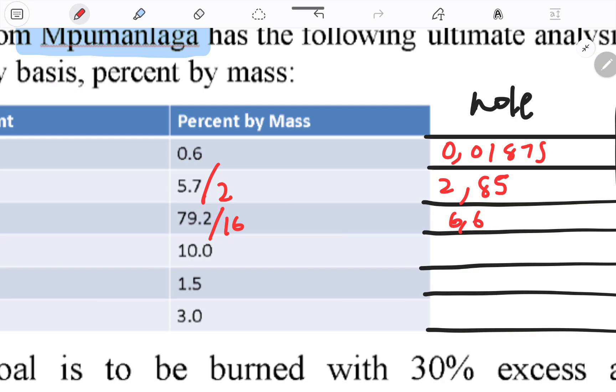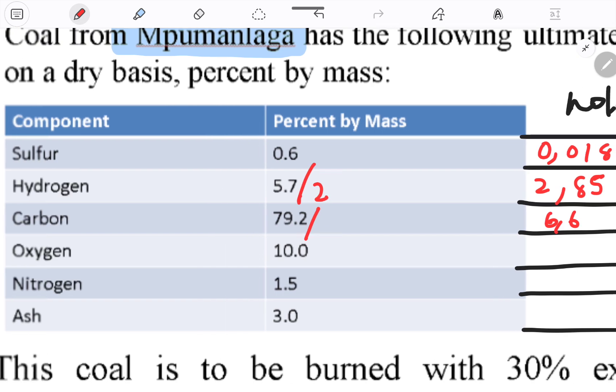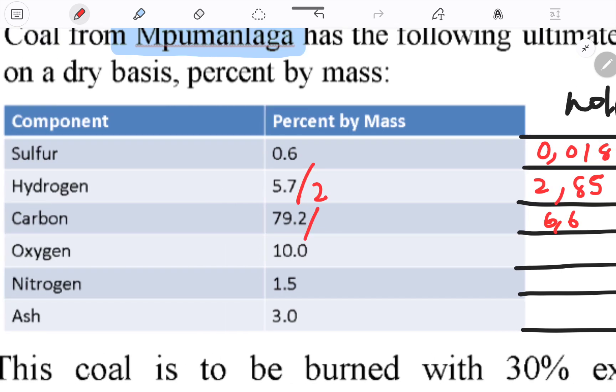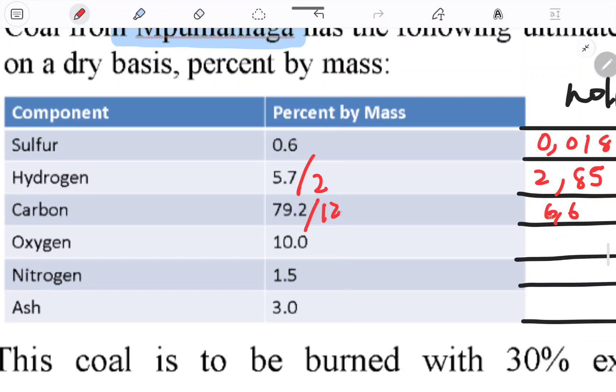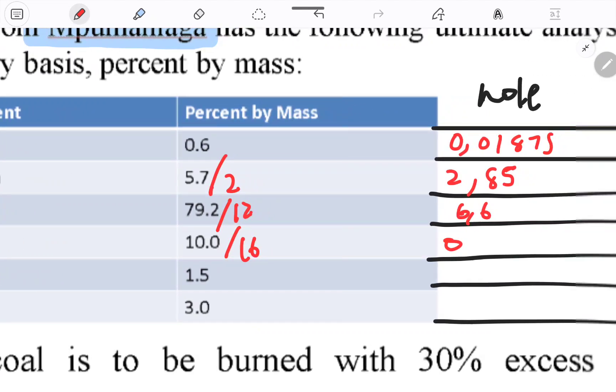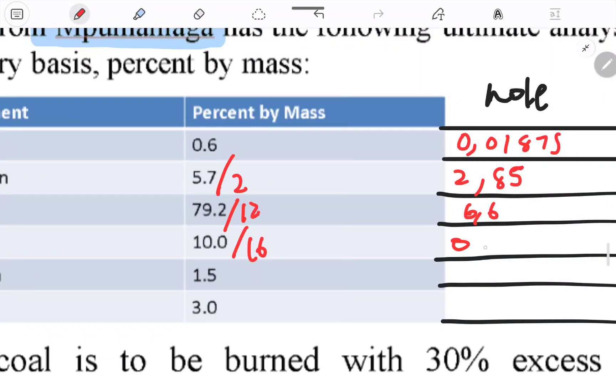For some reason I confused carbon with oxygen. Oxygen is divided by 16, then I'm getting 0.625.